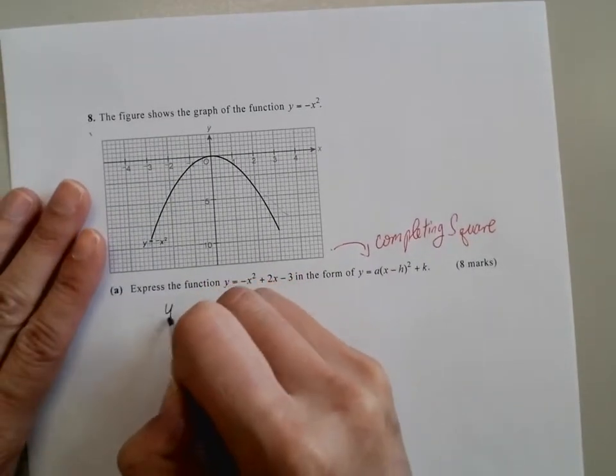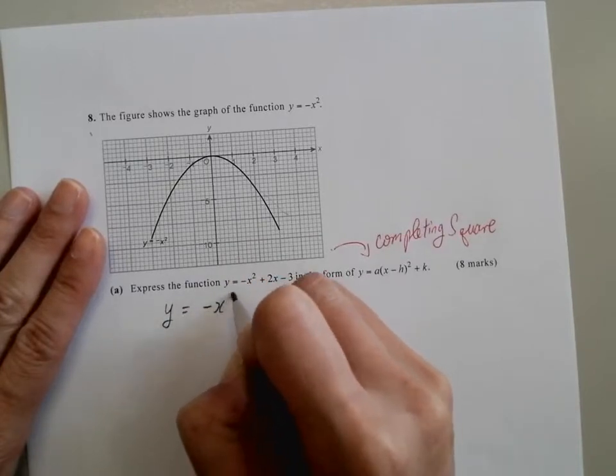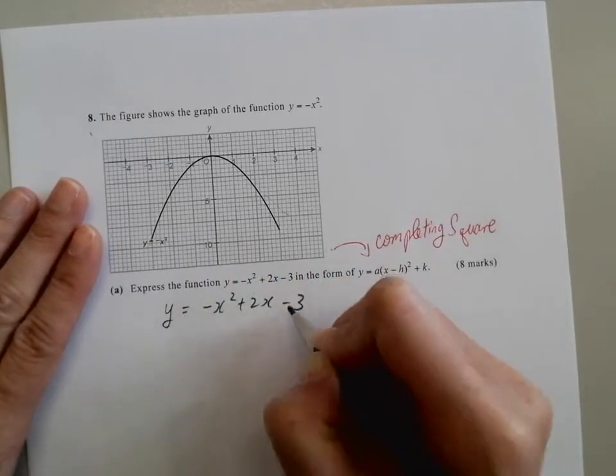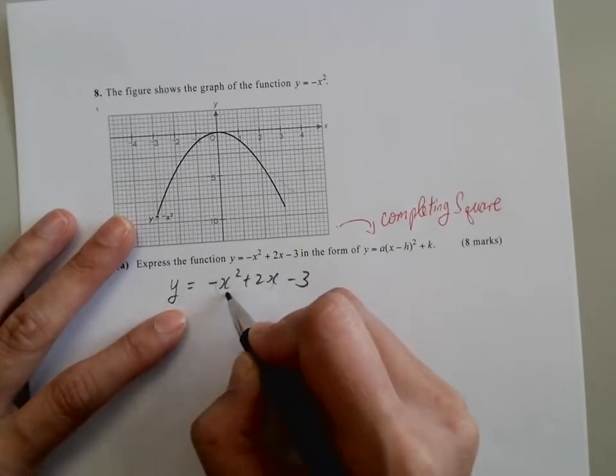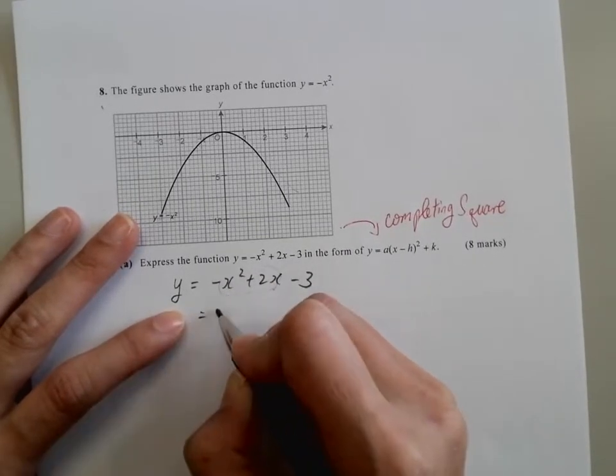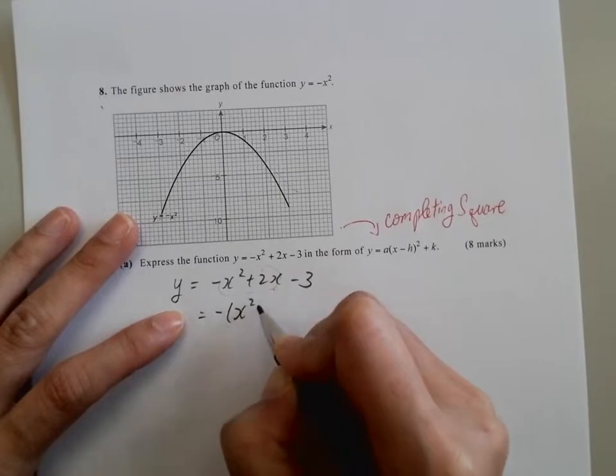So we have y equals to negative x squared plus 2x minus 3. We're going to take the negative out. I only focus on these two terms, so what I'm going to do is like x squared minus 2x minus 3.